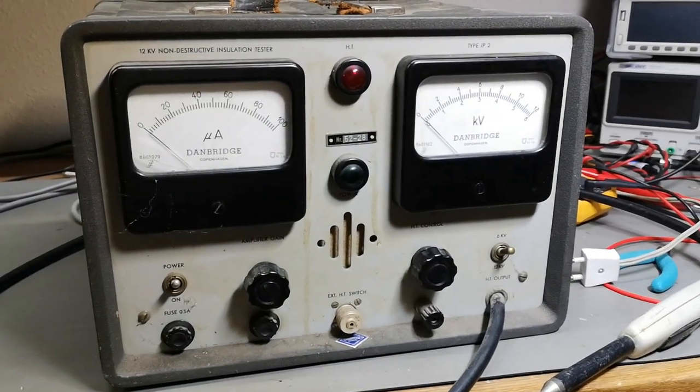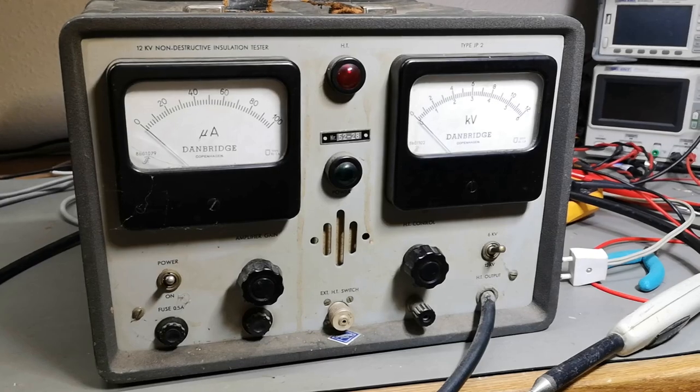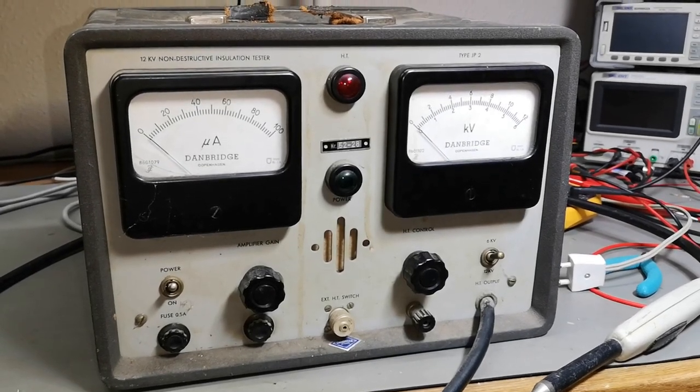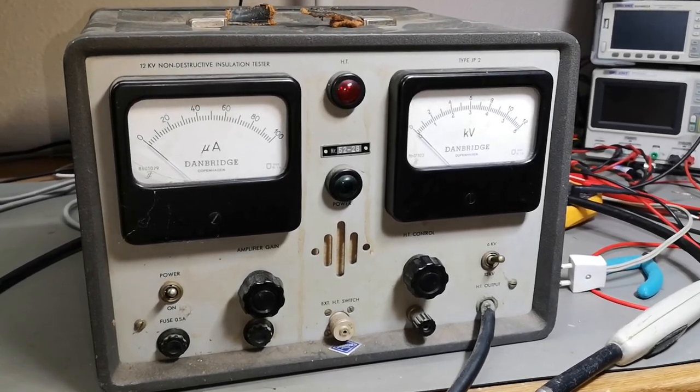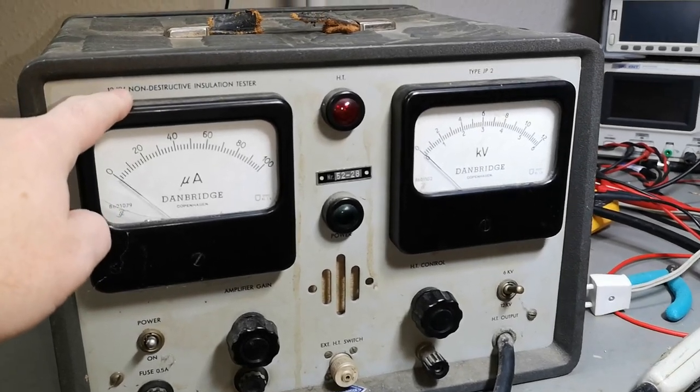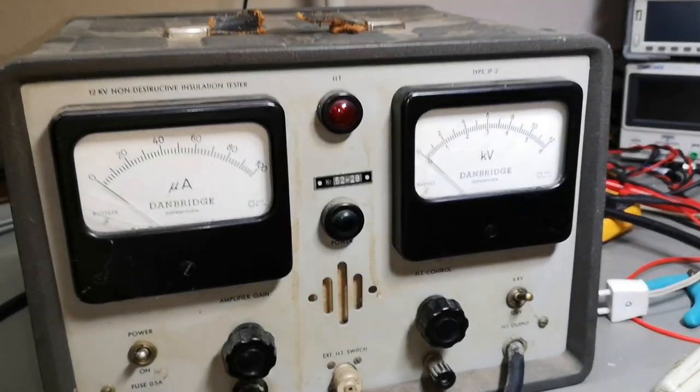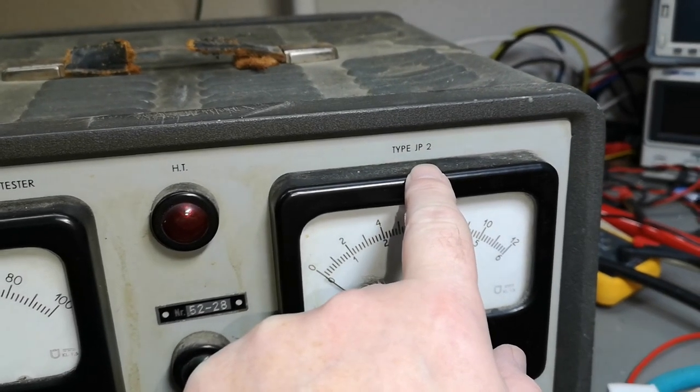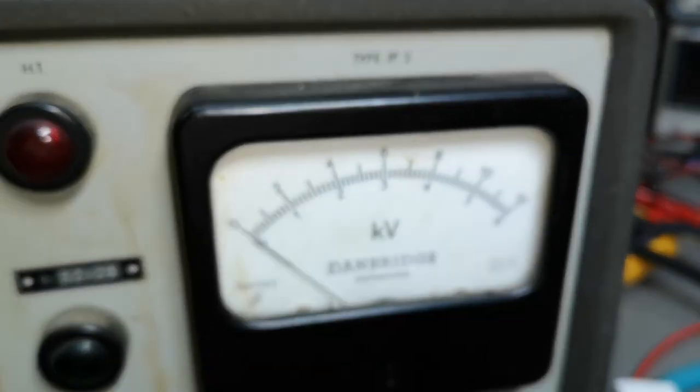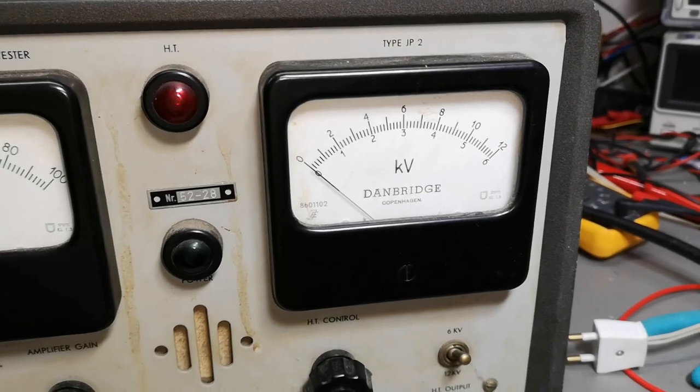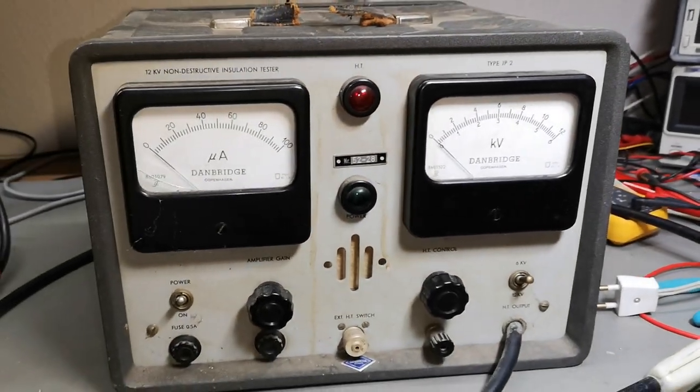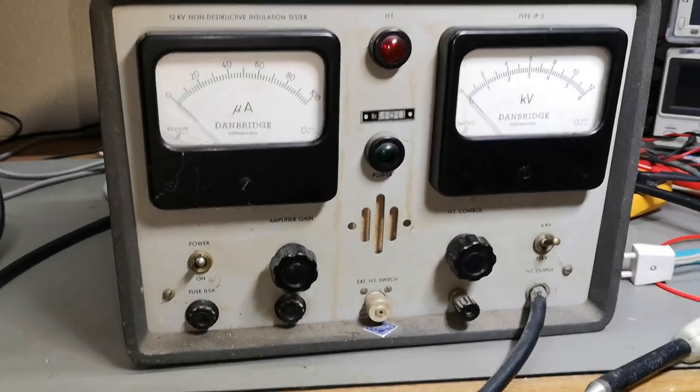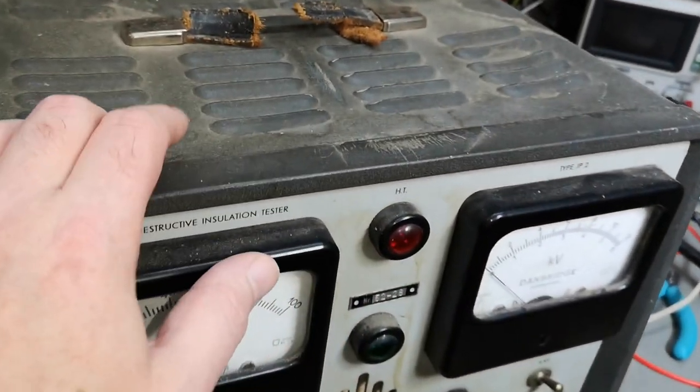Welcome to a new test and tear down video. Here is another Danbridge 12 kilovolt non-destructive insulation tester, this one is called type JP2. This one is old but it is also in a very sad condition. I mean, look at the case.